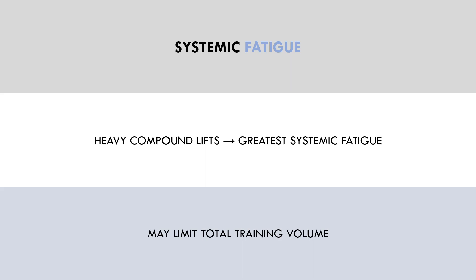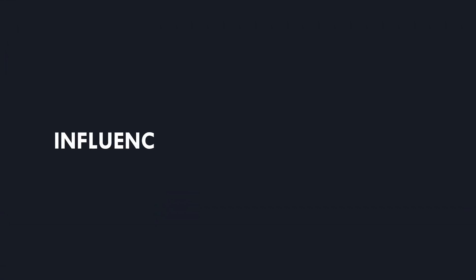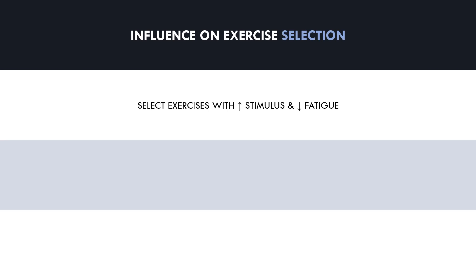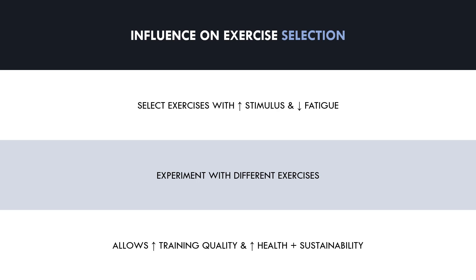We want to select exercises which minimize systemic fatigue, because like joint stress, total systemic fatigue will limit how much volume we can perform and therefore limit hypertrophy outcomes. Essentially, trainees should try to select exercises with the best stimulus and lowest fatigue cost. This will allow us to achieve the best hypertrophy response while minimizing joint stress and systemic fatigue. There are no exercises we must perform for hypertrophy training because it is not a performance outcome, so trainees can experiment with what exercises provide a good hypertrophic stimulus and minimize fatigue.